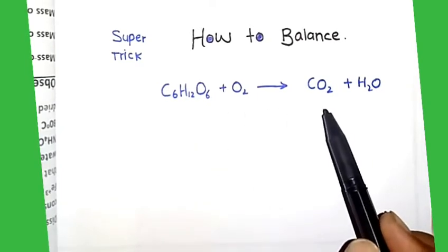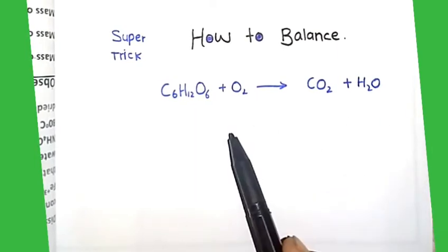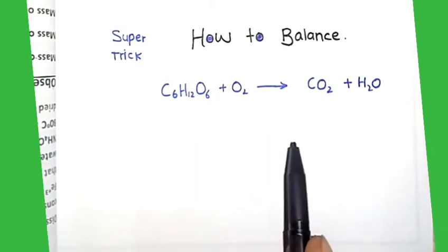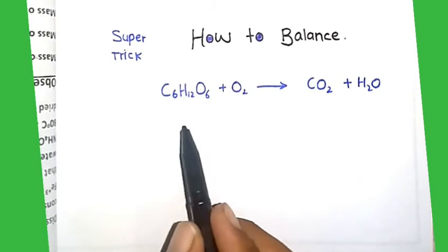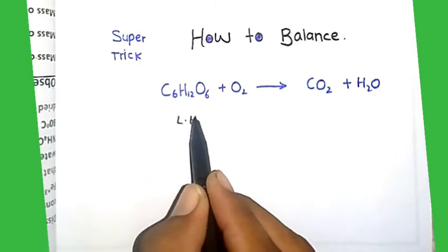The product is formation of carbon dioxide plus water. How to balance this equation? First of all, we write the element on left-hand side, meaning reactant, that is left-hand side.